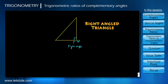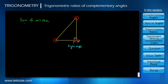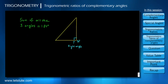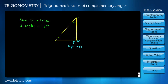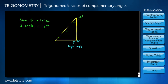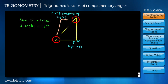We also know the fact that in a triangle, the measure of all three angles is equal to 180 degrees. So if one angle is 90 degrees, the sum of the remaining two angles should be 90 degrees. When the sum of these two angles is equal to 90 degrees, they complete the triangle and are called complementary angles.